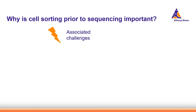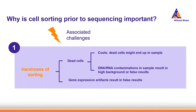However, cell sorting comes with some challenges. If the cell sorting technique is harsh, dead cells might end up in the sample, which could increase costs, and DNA and RNA contaminations in the sample might result in background. Harshness of the sorting can also lead to gene expression artifacts that lead to false results.